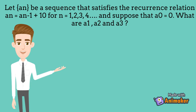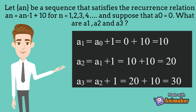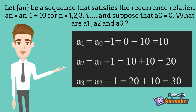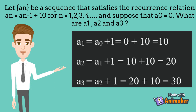In this question, the initial condition is a0 equals to 0. Based on the equation an equals to an minus 1 plus 10, we can find a1. A1 equals to a0 plus 10, which is 0 plus 10, and the answer is 10. A2 equals to a1 plus 10, which is 10 plus 10, and the answer is 20. A3 equals to a2 plus 10, which is 20 plus 10, and the answer is 30.